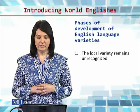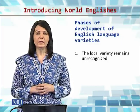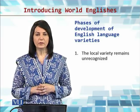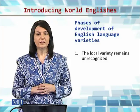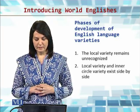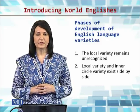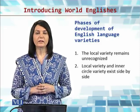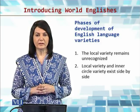English language varieties go through different phases of development. The first phase is when the local variety remains unrecognized in the community where it is used, because the local community, although they are themselves non-native English language speakers, prefer the native language as the norm. Therefore, the local variety remains unrecognized. The second phase is when the local variety and the inner circle variety exist side by side, although people still prefer the inner circle variety, i.e., native English.